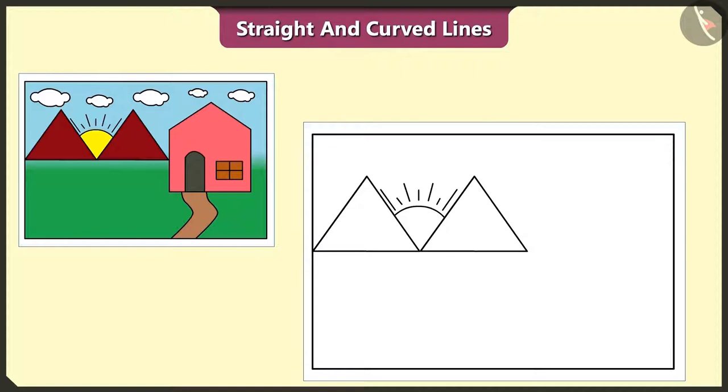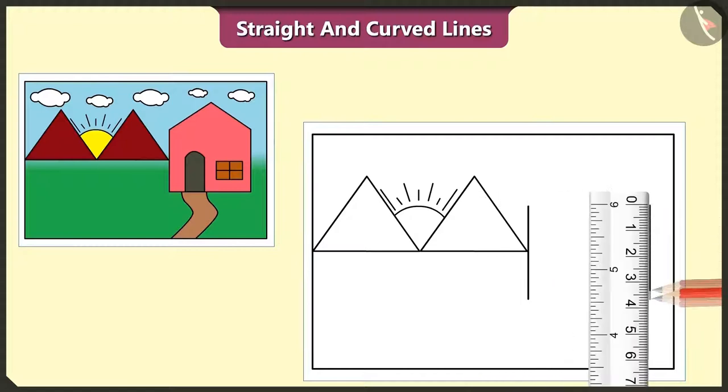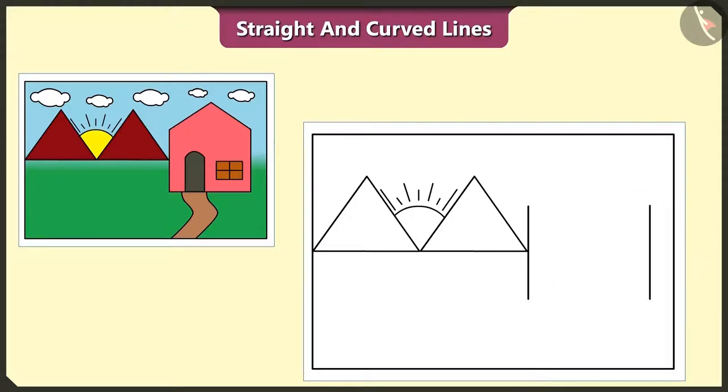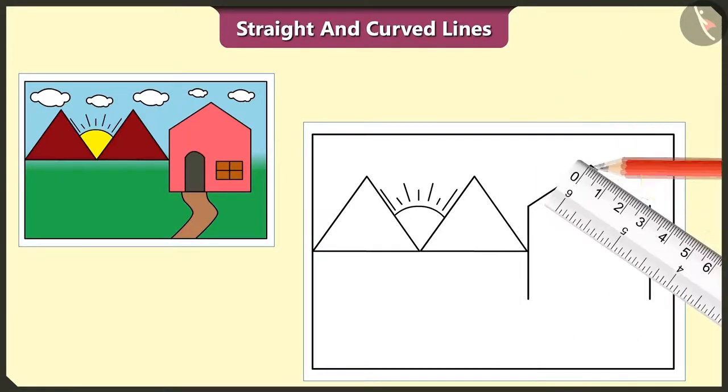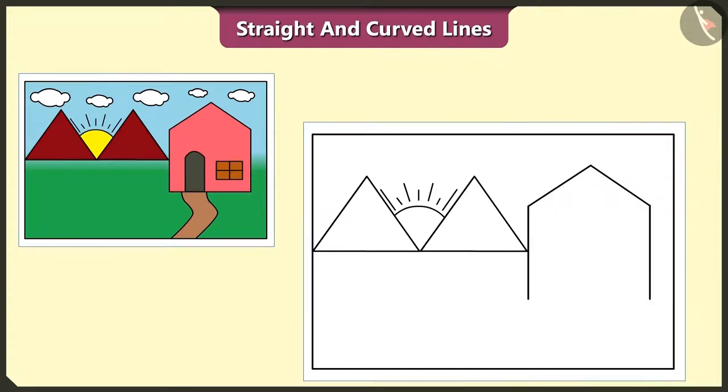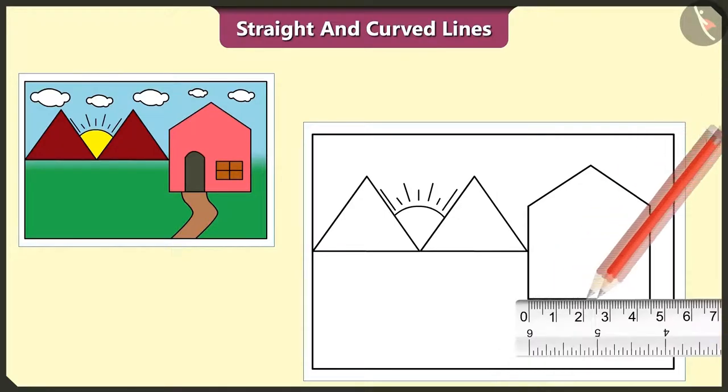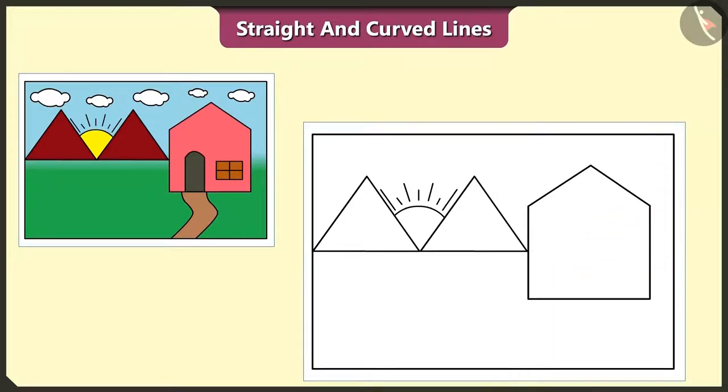Let's draw a house using both straight and curved lines. Yes, first of all, we have to draw two straight lines like this. Let's draw two more straight lines above these straight lines. Let's draw one more straight line at the base of these two straight lines.